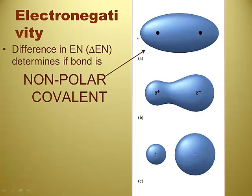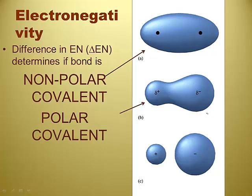The next one shows sigma plus and sigma minus — that's a partial positive charge and partial negative charge. The electron cloud is going more towards one side, so there's a little bit of polarity — we call that polar covalent. The electrons are still being shared, just not evenly; they're more attracted to one atom. And in the last diagram, the electrons don't get shared at all — they're completely over on one atom: one is a positive ion, one's a negative ion. That's ionic.